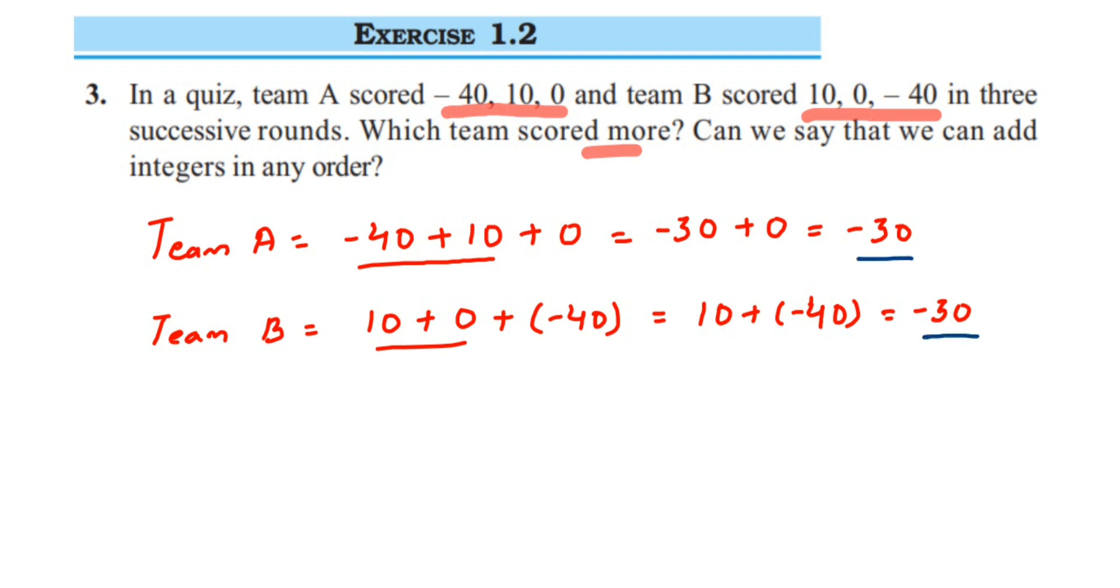So you can see that both team A and B scores are -30, so from here we can conclude that the score of team A and B is the same. So they have scored the same.